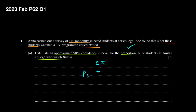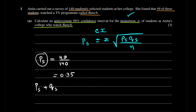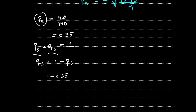The formula is PS plus or minus Z times the square root of PSQS over N. PS stands for proportion of success which is 49 out of 140, which comes out to be 0.35. QS is 1 minus PS, which is 1 minus 0.35, giving 0.65. We also have the value of N which is 140.